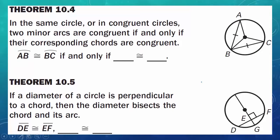Let's look at some theorems. Theorem 10.4: in the same circle, or in congruent circles, two minor arcs are congruent if and only if the corresponding chords are congruent. Arc AB is congruent to arc BC if and only if line segment AB is congruent to line segment BC. So if AB is congruent to BC, then we can say that arc AB is congruent to arc BC.